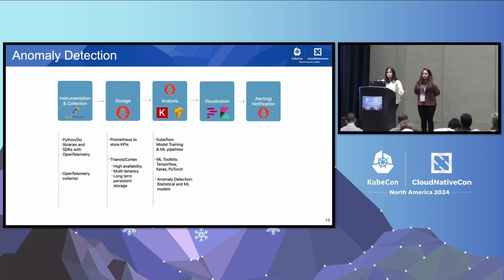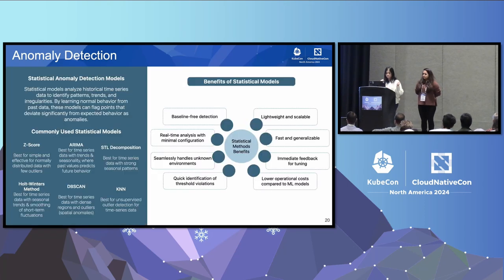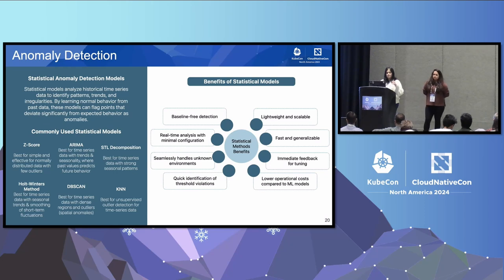You can use frameworks like Kubeflow and KServe to actually train your models and deploy them. Kubeflow comes out of the box with features like distributed training, experiment tracking, hyperparameter tuning, and integration with CPUs and GPUs. KServe integrates with Kubeflow to serve these models in production.